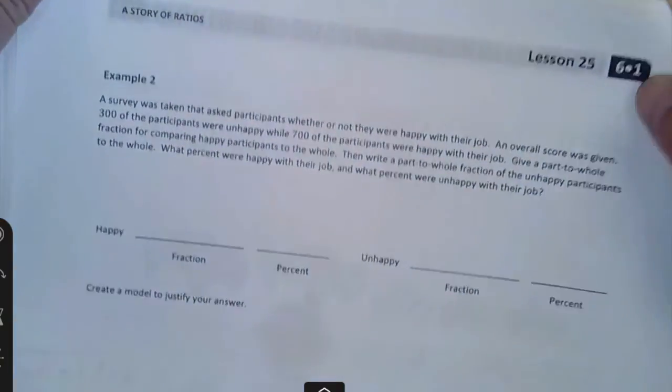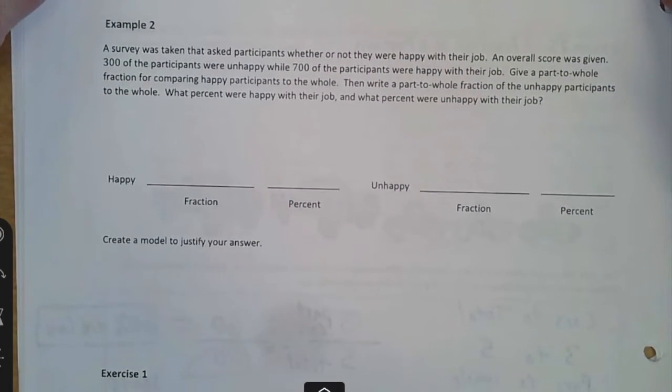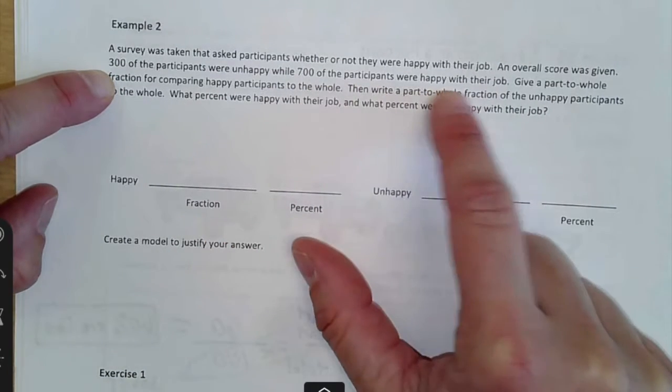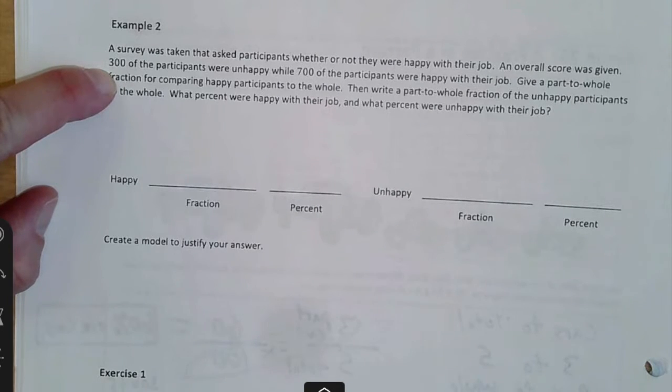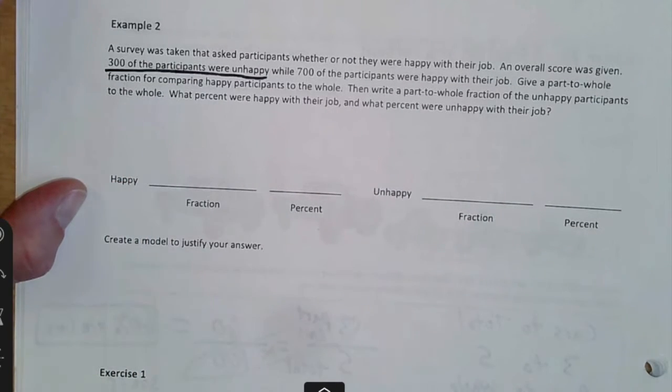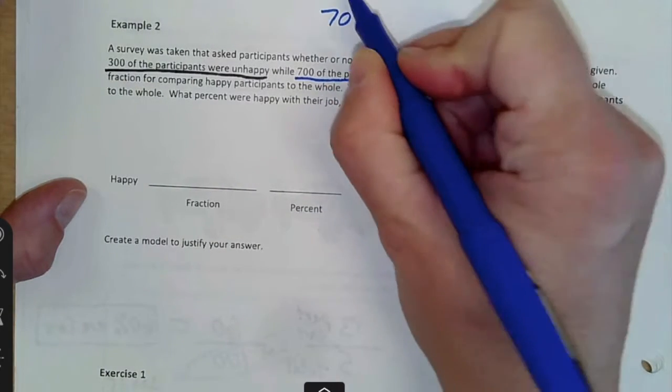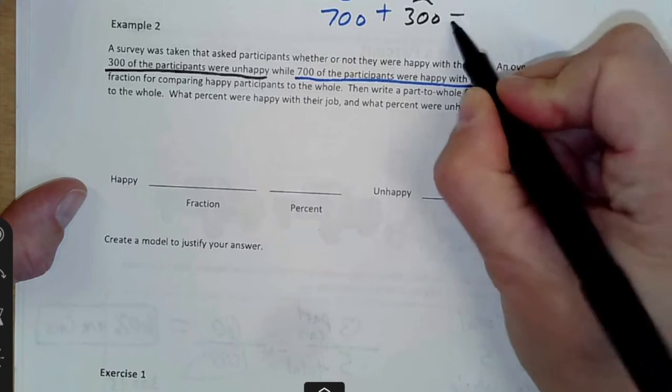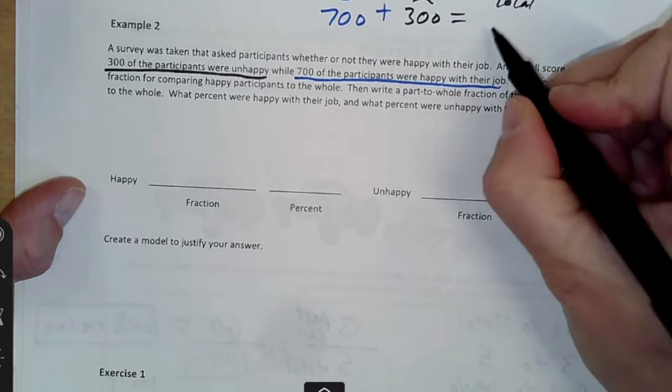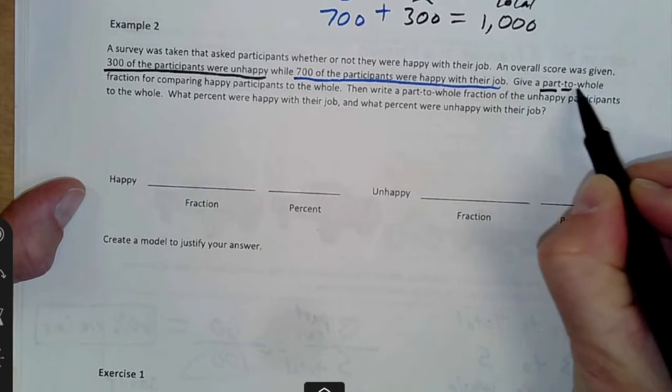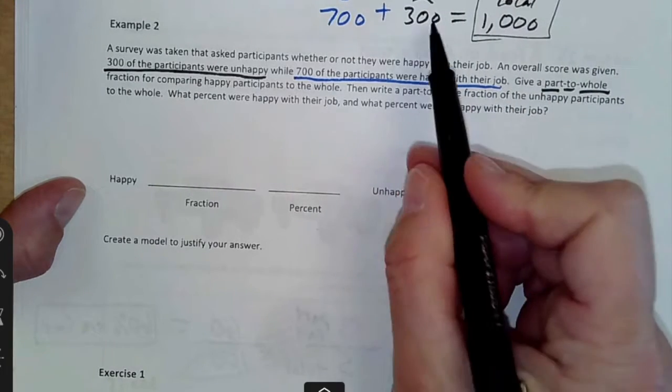A survey was taken that asked participants whether or not they were happy with their job. An overall score was given. 300 of the participants were unhappy while 700 were happy. If I add that to the 300 that were unhappy, then how many total participants would there be? A thousand total. Give a part to whole, so part to whole. Whole would be like the total amount and one of these parts to it.